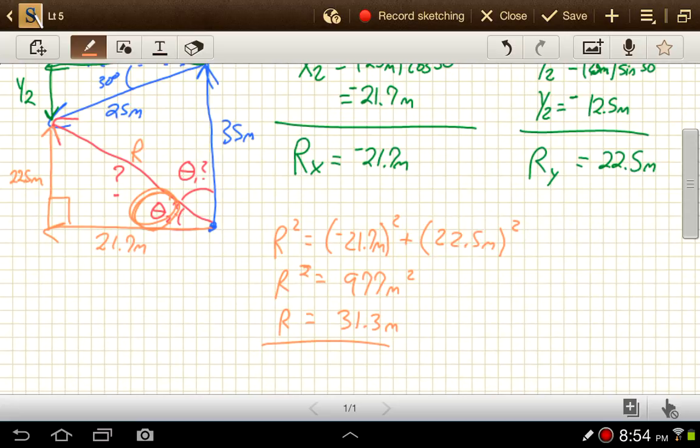So my angle is going to be equal to, if you're finding an angle, we always do an inverse trig function. So since I started out knowing the opposite and adjacent sides, might as well use the inverse tangent of 22.5 meters over 21.7 meters.